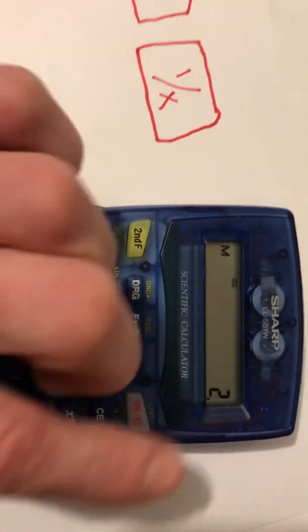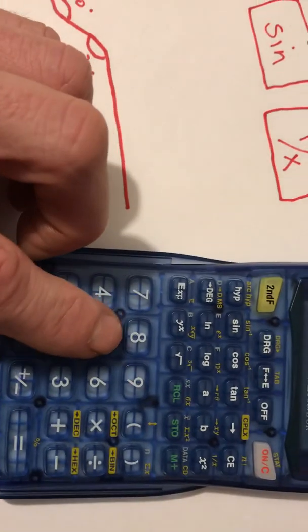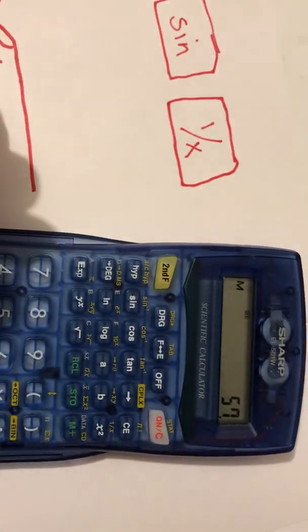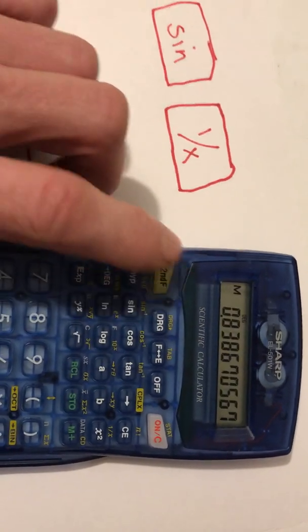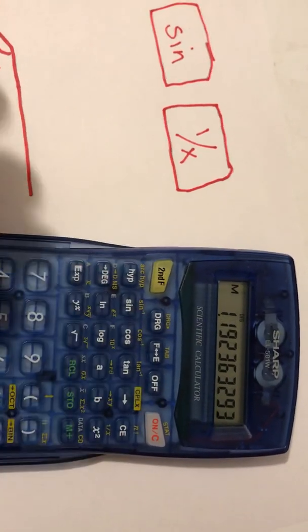So, let's clear this. So, we hit 57. Sine. 1 over x.